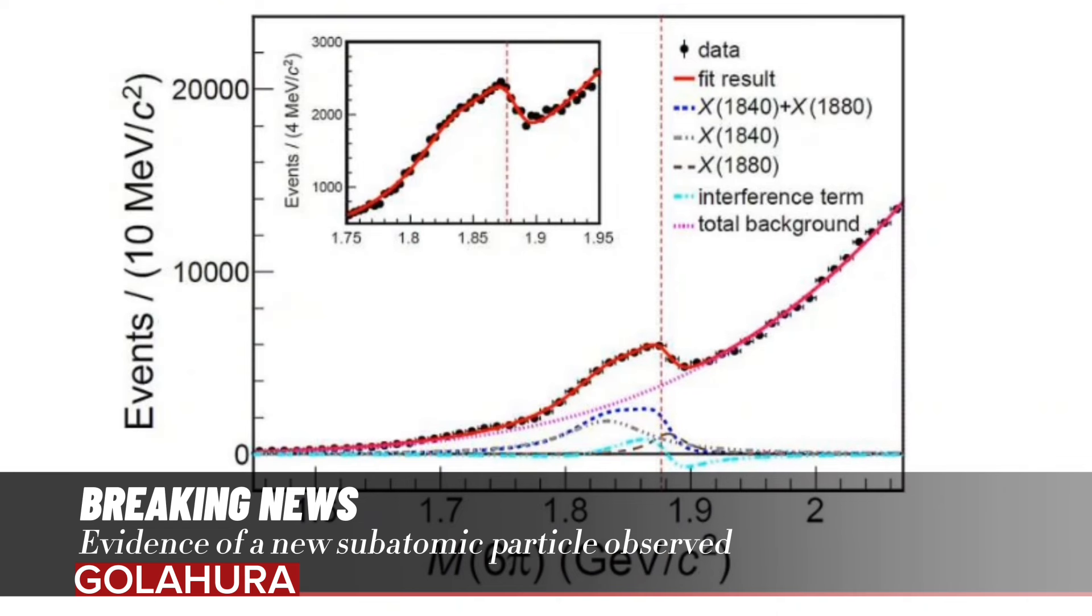Evidence of a new subatomic particle observed. The BESIII collaboration have reported the observation of an anomalous line shape around p-pbar mass threshold in the J/ψ→γ3(π+π-) decay, which indicates the existence of a p-pbar bound state. The paper was published online in Physical Review Letters.